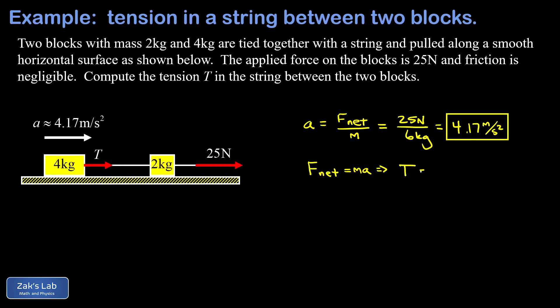So we have T is equal to ma, the mass of the block is 4 kilograms. It's accelerating along at 4.17 meters per second squared. And we arrive at a tension of 16.7 newtons. Note there that a kilogram meter per second squared is a newton.